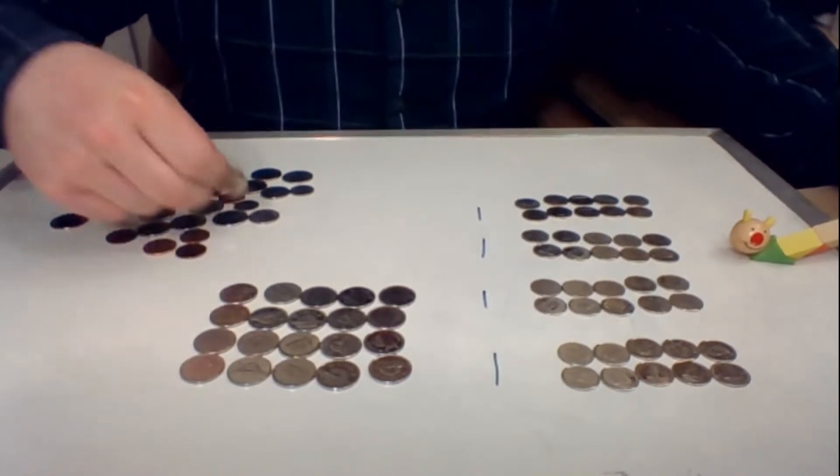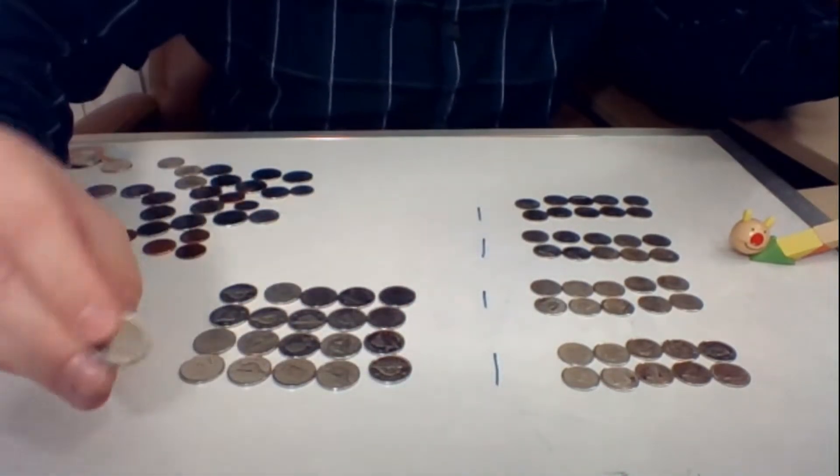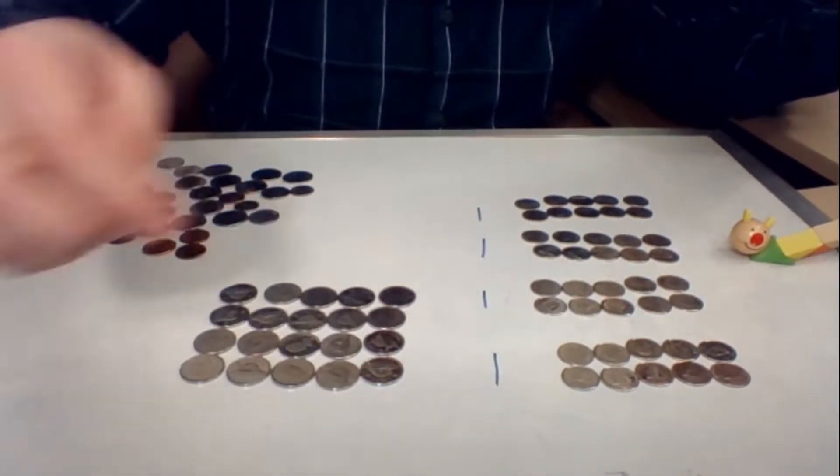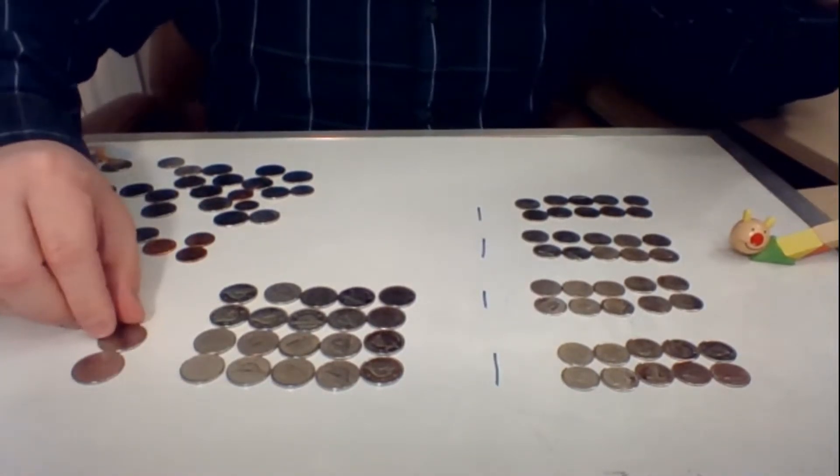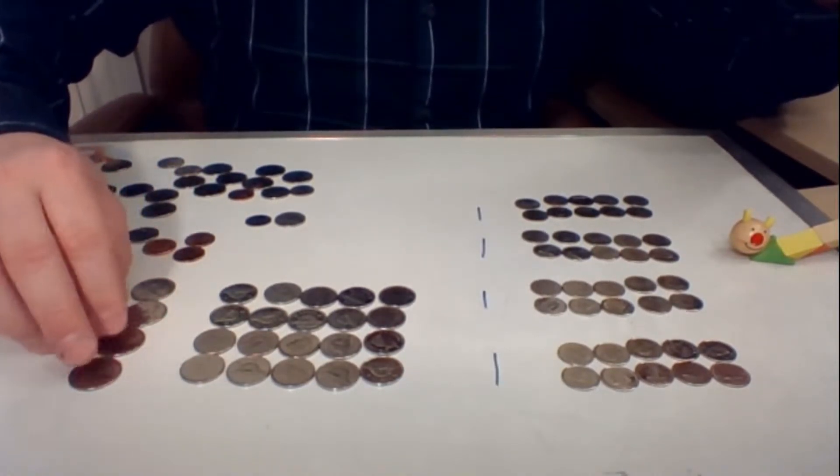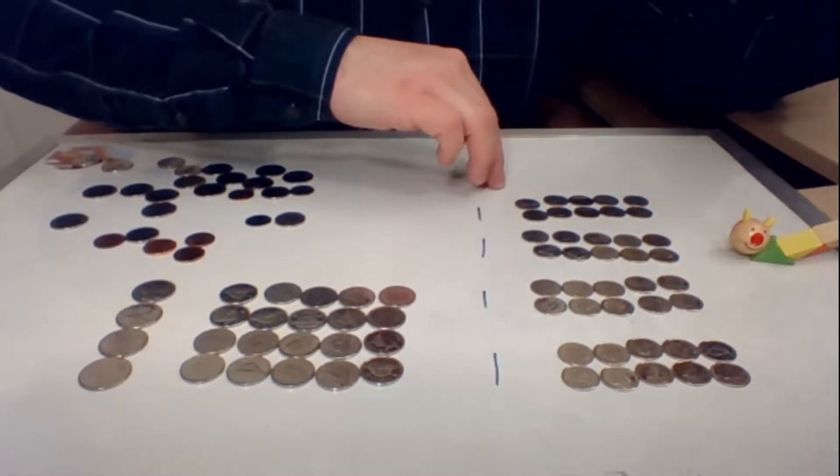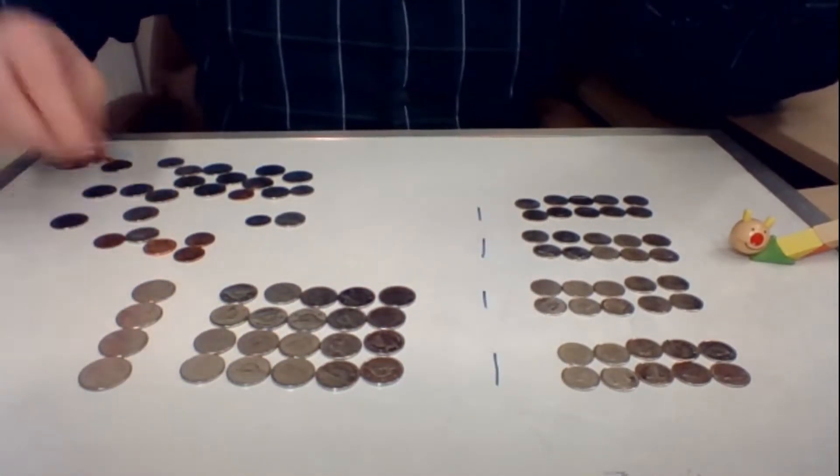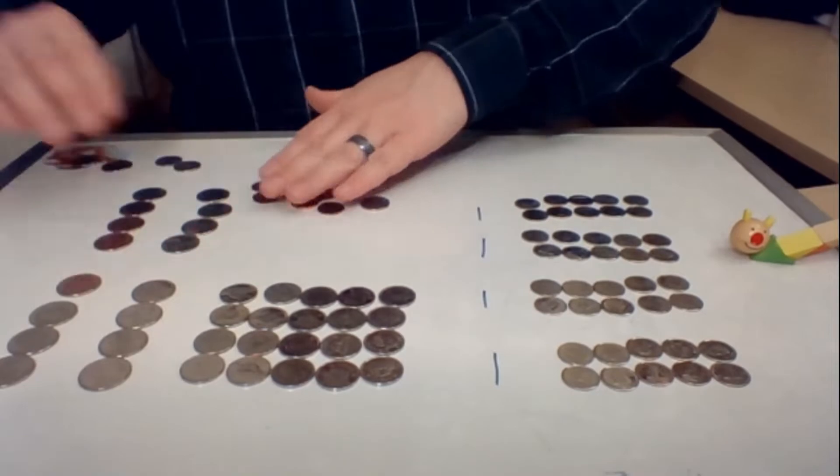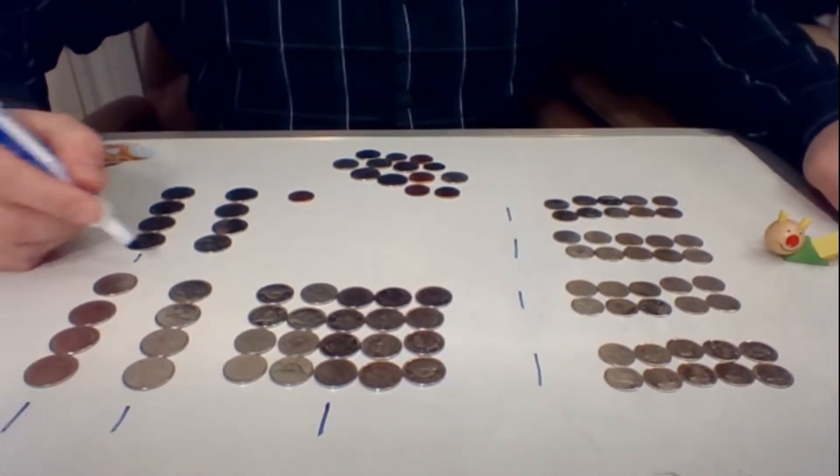So instead of a group of 10 dimes, I have a group of 20 nickels. Each one is worth half as much, which means I need twice as many. Now I've got these other big ones here with a moose on it. As we can see, this one's worth 25 cents. So that's like having a full row here. 5, 10, 15, 20, 25. So that means to make $1, I'm going to need 1, 2, 3, 4 moose. Four moose. So each of these is $1, this is $1, this is $1. Let's get a few more quarters. So we've got $1 here, we've got another $1 here, another one here, another one here, and here.